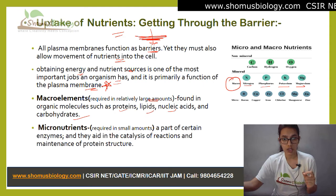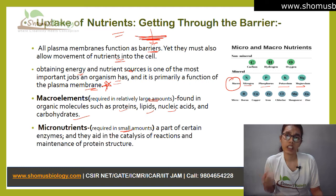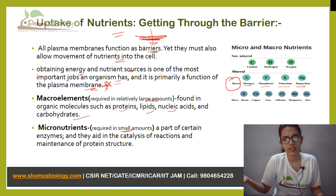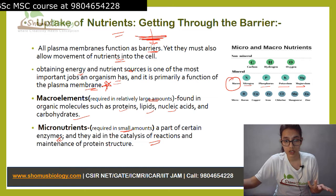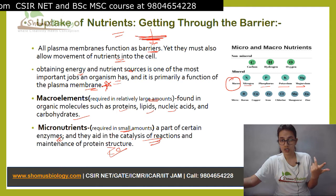Then there are micronutrients, which are required in small amounts — yet bacteria do require them. These could be boron, copper, iron, chlorine, magnesium, and others. These are part of certain enzymes and aid in the catalysis of reactions and maintenance of protein structure. If you need to maintain protein structure or catalyze reactions, you need enzymes, and for that you need these micronutrients.